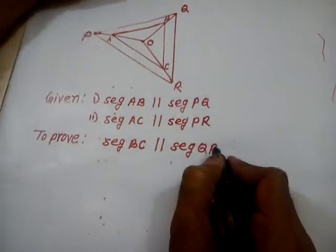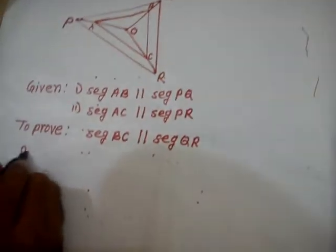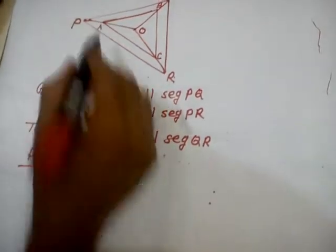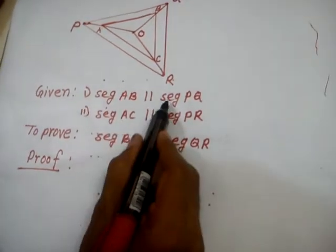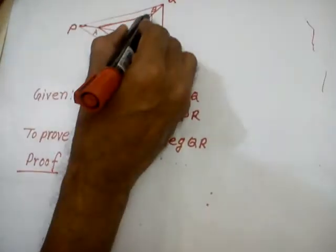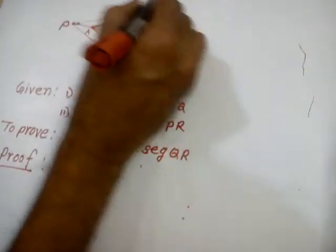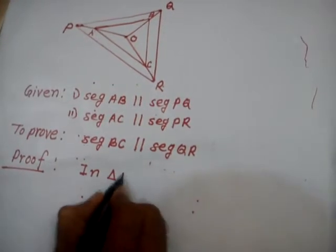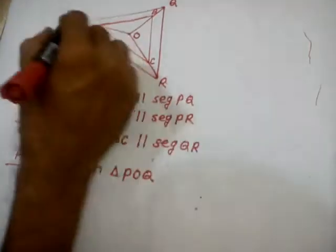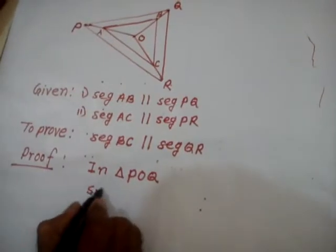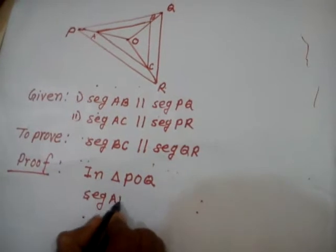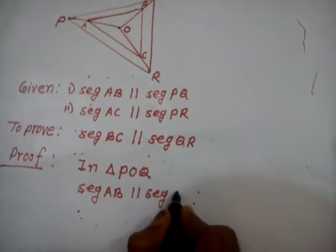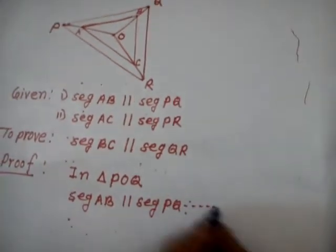Now, see here. How to prove? Proof. See, first is given to us, segment AB parallel to segment PQ. Where is the segment AB parallel to PQ? Then you have to select this triangle. In triangle POQ, segment AB parallel to segment PQ. This is given to us.